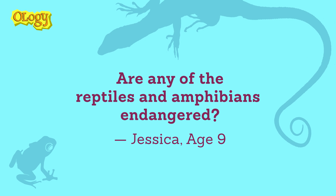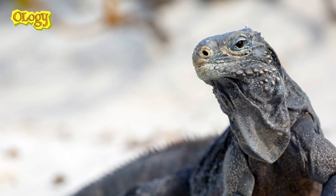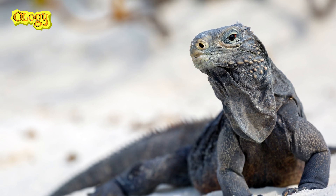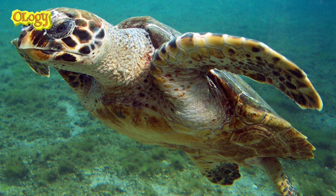Are any of the reptiles and amphibians endangered? There are some species of amphibians and reptiles in Cuba that are endangered. The rock iguana, for example, is a species found only in Cuba, and although it's large, the populations are fairly small — there's always a risk that people might try to collect them and sell them as pets. The sea turtles around Cuba are also protected. The good news is that Cuba has created many protected areas, parks and reserves, and that program is continuing, giving the species that occur there a very good chance of long-term survival.